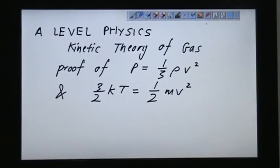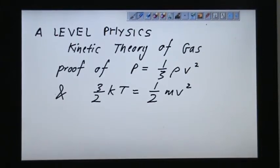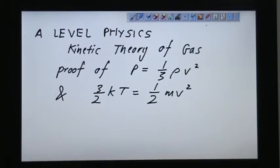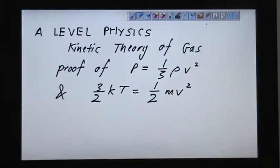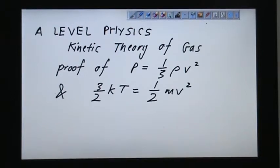Today, let's consider A-level physics, this kinetic theory of gas. We want to prove the two formulas, and this formula is pressure equals to 1 over 3 density rho v squared, and 3 over 2 kT equals to half mv squared.